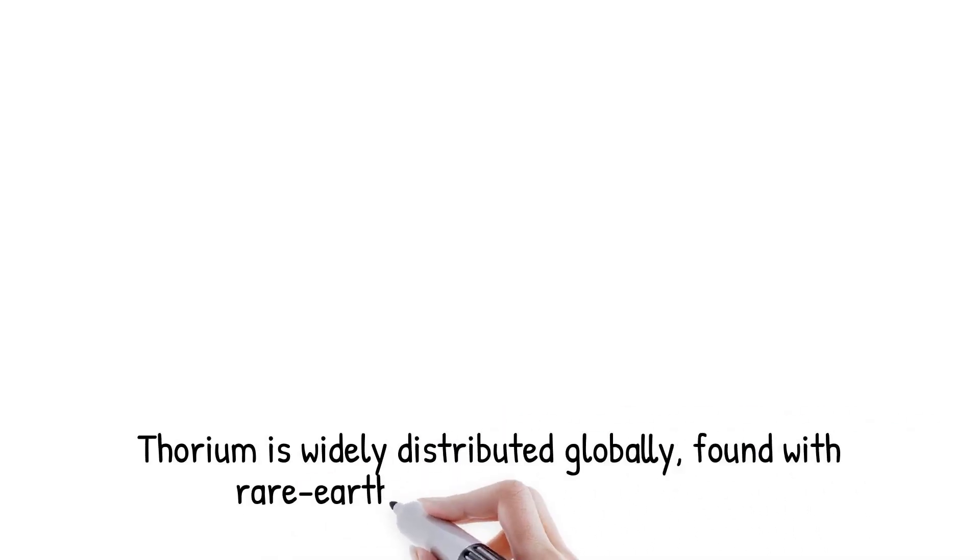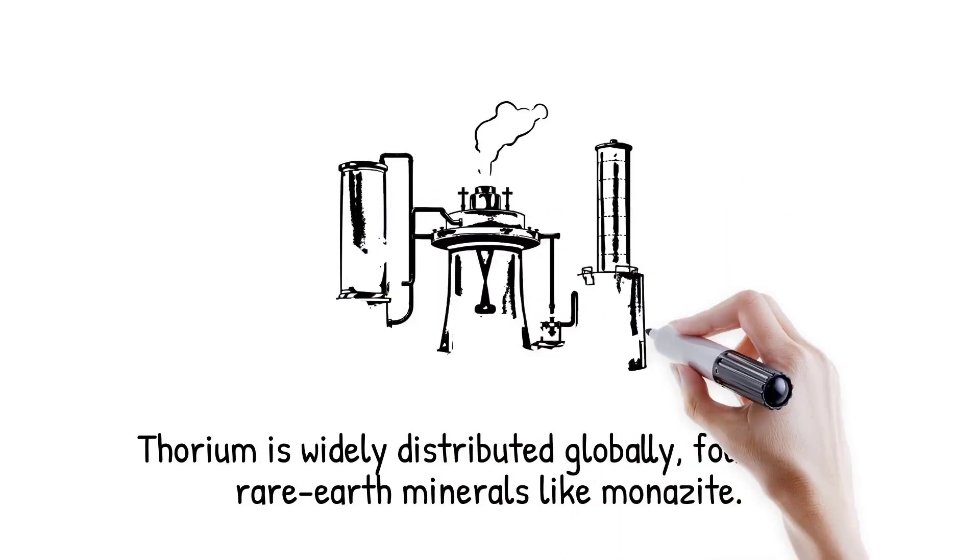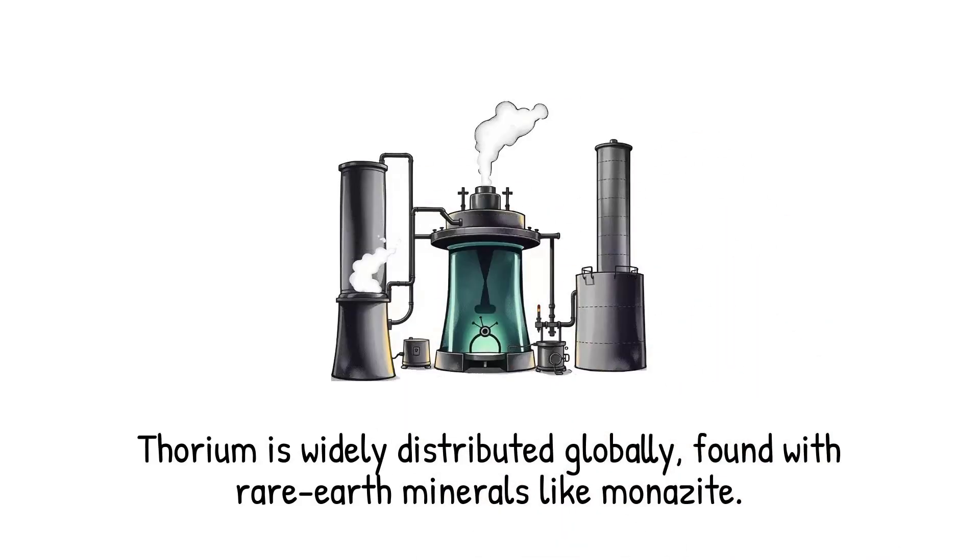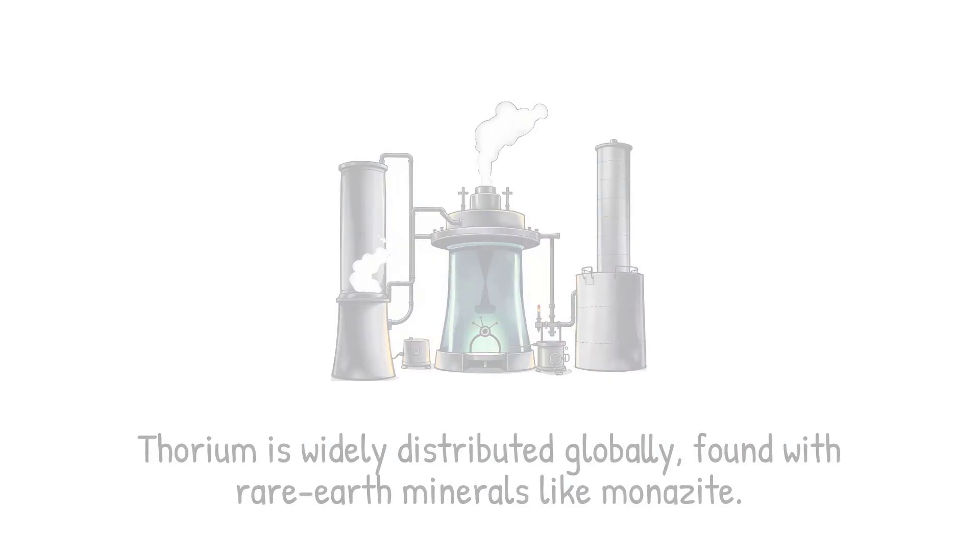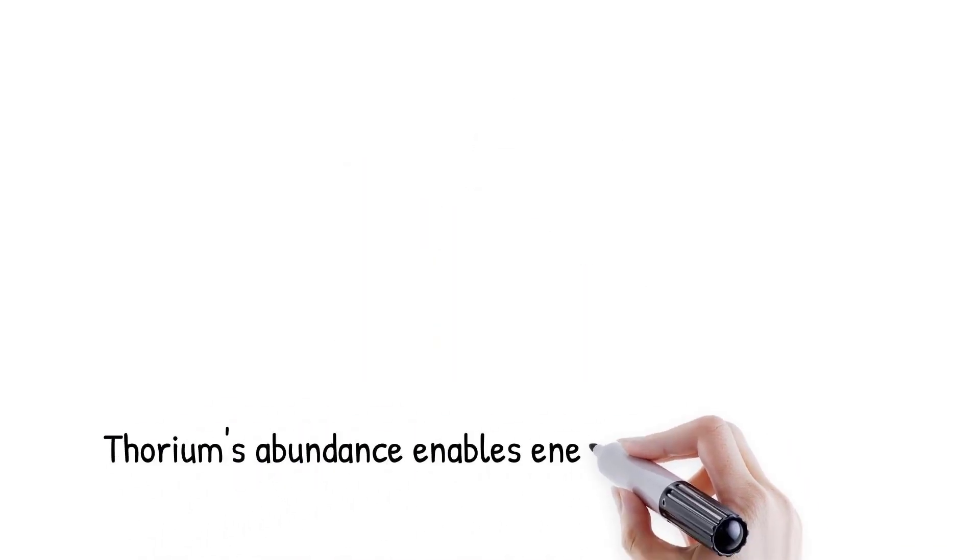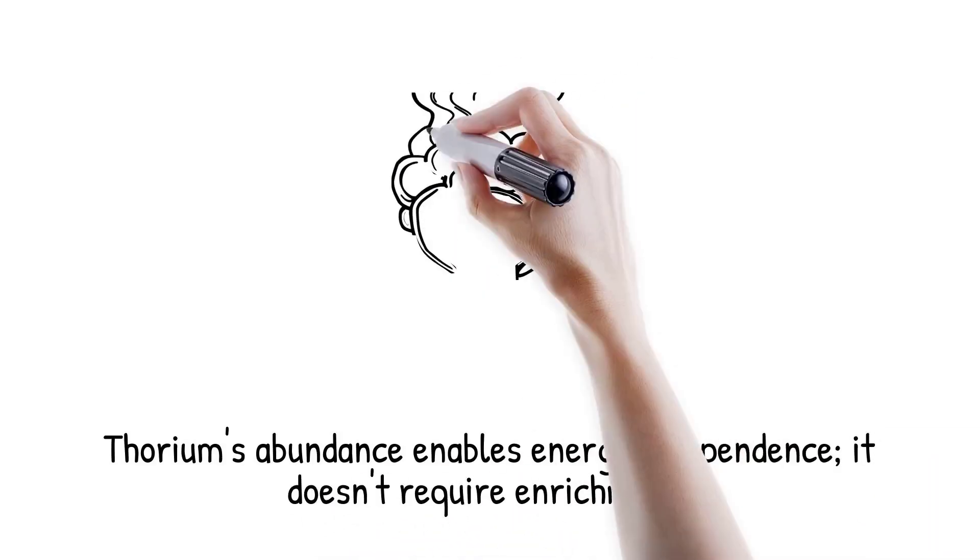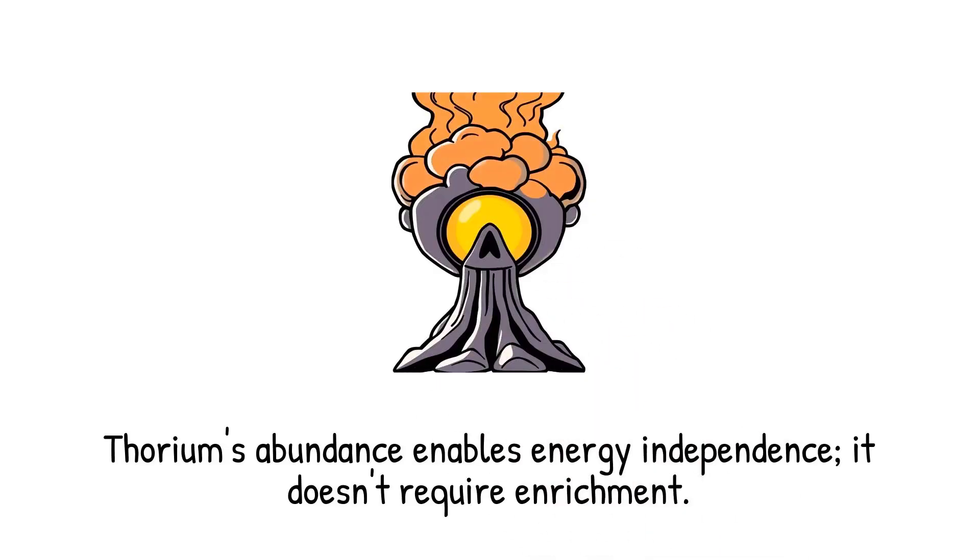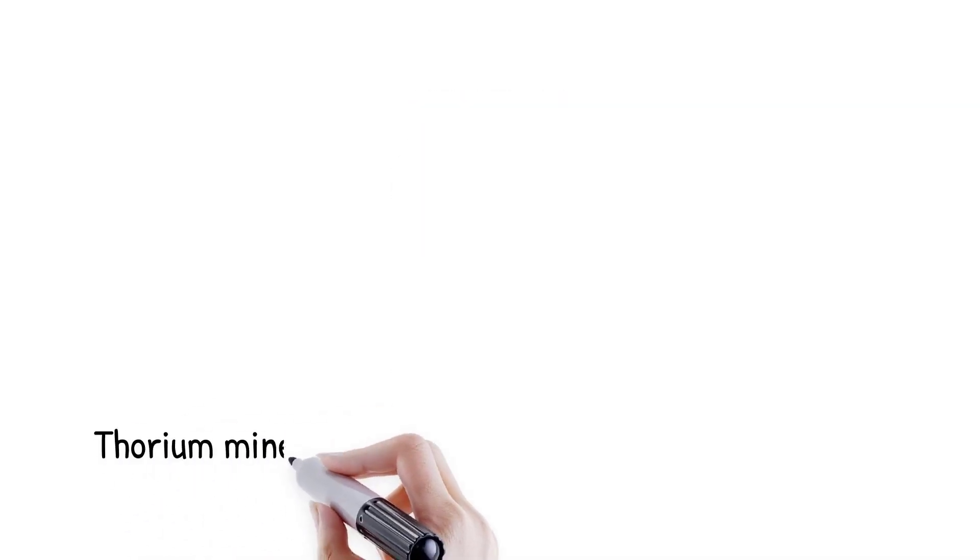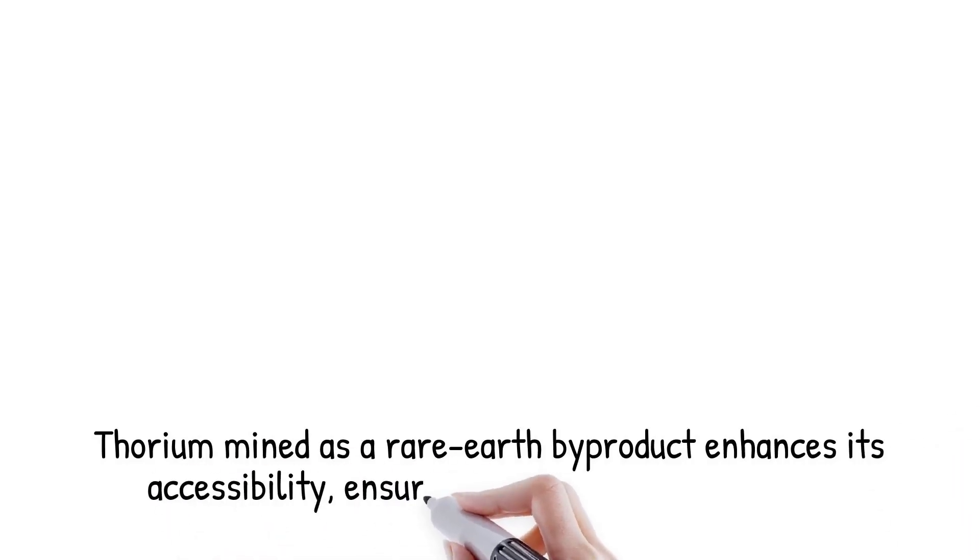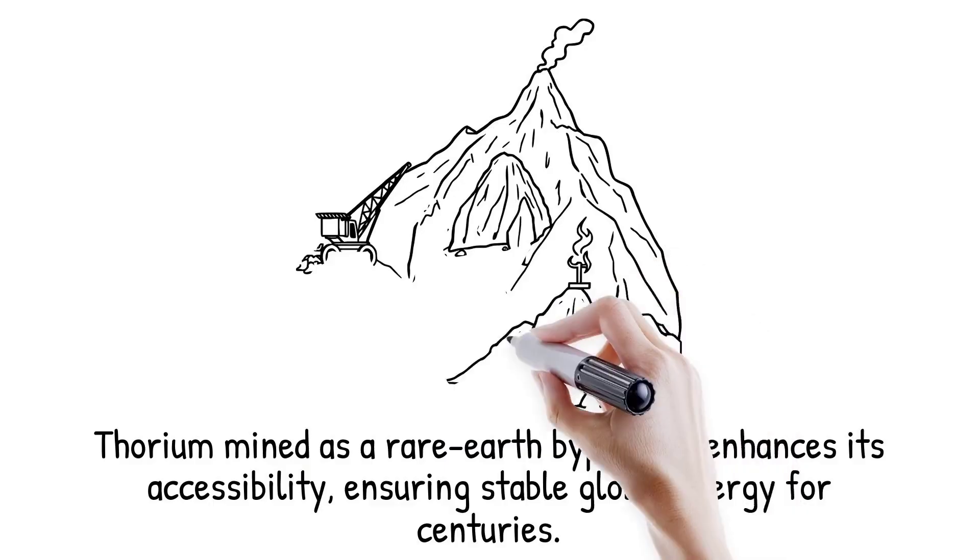Thorium is widely distributed in the Earth's crust and often occurs alongside rare earth minerals such as monazite. Large deposits are found in India, Australia, Brazil, and the United States. Its abundance means that many countries could achieve energy independence using thorium. Unlike uranium, thorium does not need enrichment, reducing the cost and complexity of fuel preparation. Mining thorium as a byproduct of rare earth elements further increases its accessibility. This ensures that thorium could serve as a stable global energy source for centuries.